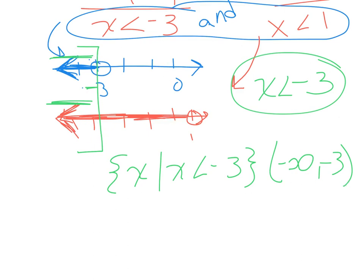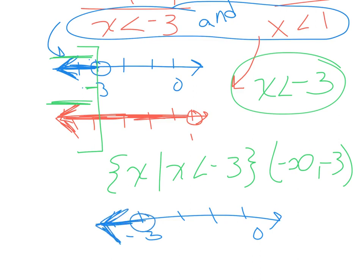We should draw one final graph that depicts the solution. It duplicates the first graph since that represents the solution. When working these problems, you can use two intermediate graphs, but you should merge them into one solution graph, along with your set builder notation and interval notation.